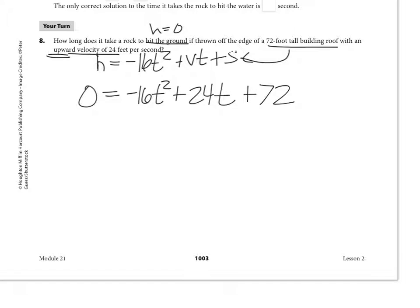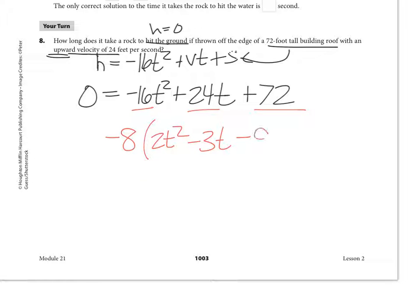Now solve by factoring. You could use the calculator for decimal values, but let's factor. Look for a GCF and try to make the squared term positive. What goes into 16, 24, and 72? Eight will, so take out negative 8: that leaves 2t² − 3t − 9 inside. The signs change to minus because we took out that negative.